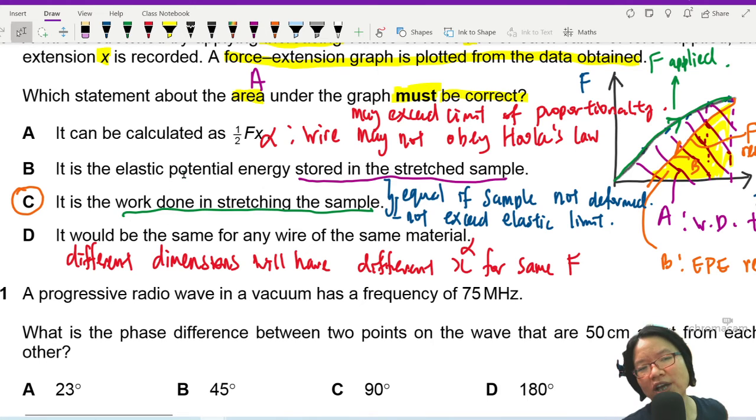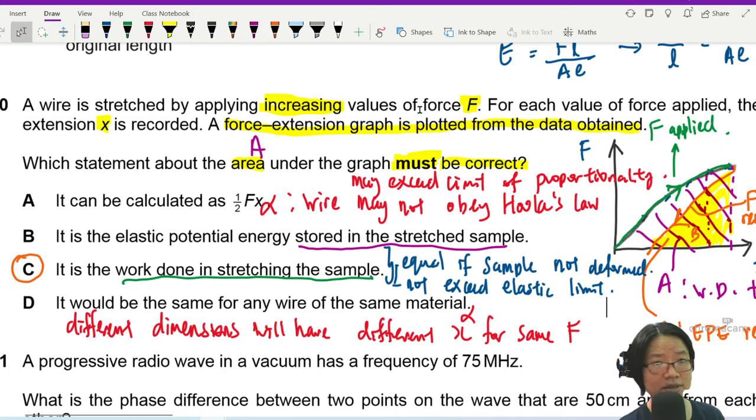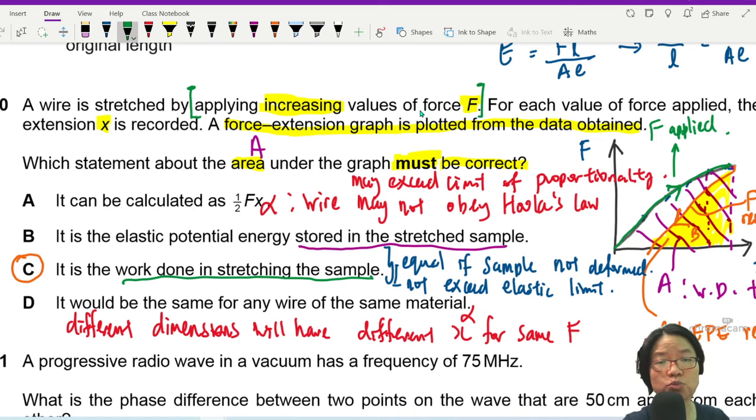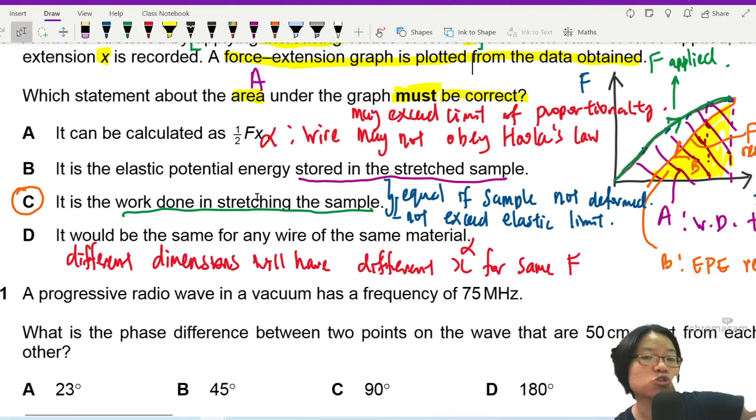So now we are left with two energy statements. One is energy stored in the sample. One is energy required to stretch the sample. So because now I'm applying a force, my question here, the graph is gotten by applying the force, not removing the force. So because of this, when I apply a force, this is work done in stretching the wire sample. It may be equal to the elastic potential energy stored in the wire if, number one, when I remove the force, it goes back to the original line.